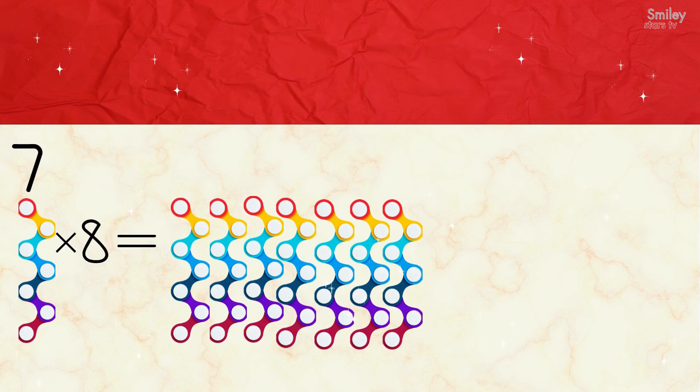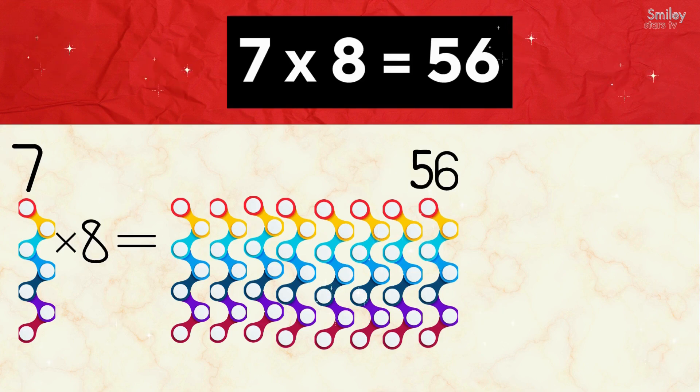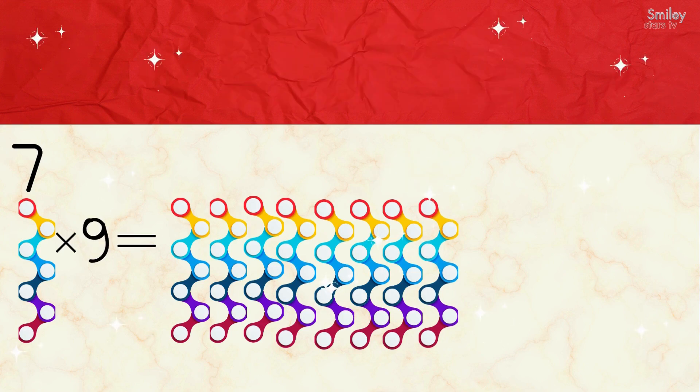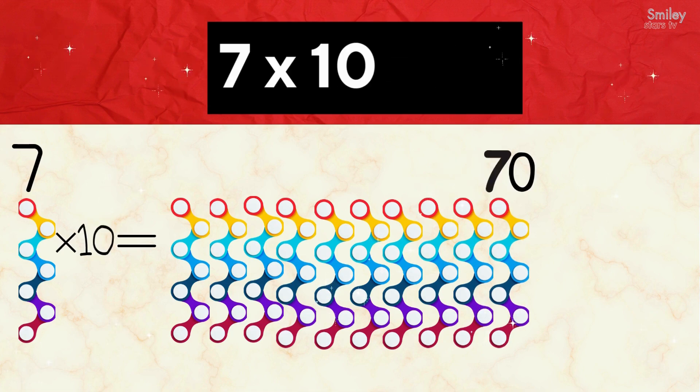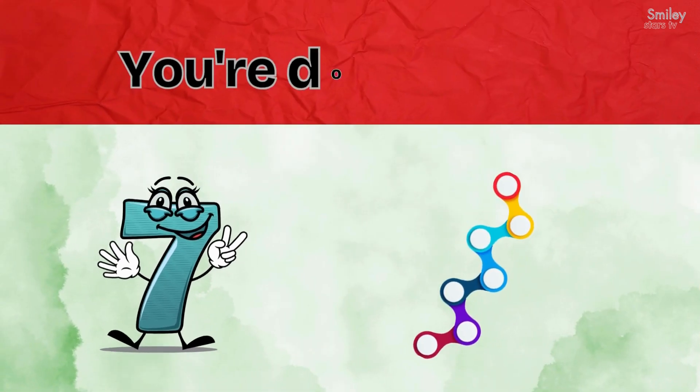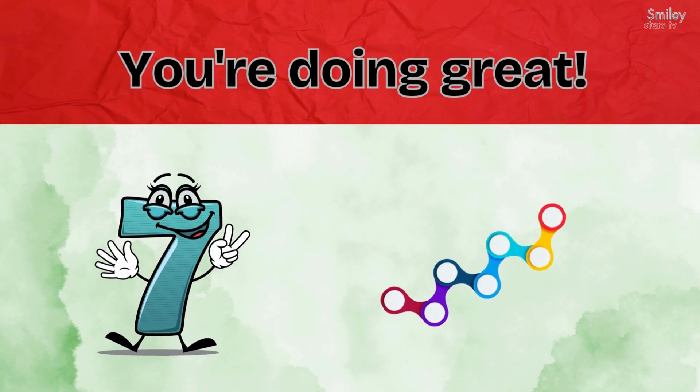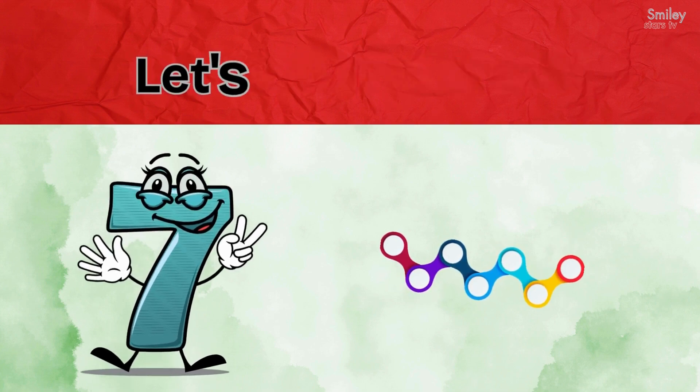Seven eights are fifty-six, seven nines are sixty-three, seven tens are seventy. You're doing great, let's sing it again.